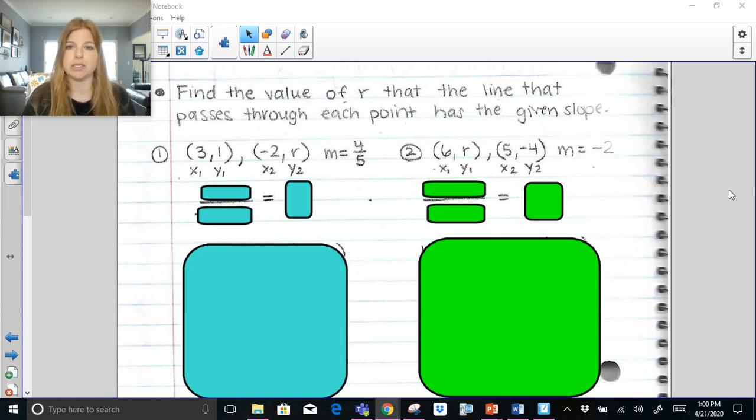Find the value of r so that the line that passes through each point has the given slope. So here if I gave you these two ordered pairs, (3,1) and (-2,r), or we don't know that y value so we're going to just call it r, but it has a slope of 4/5. Usually in the other problems I would give you two ordered pairs and ask you to find the slope. In this one I'm actually giving you the slope but asking you to figure out what would r have to be so that if I did the slope formula between these two points I get 4/5 as an answer.